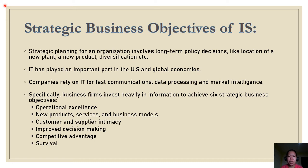The first objective is operational excellence — this relates to achieving excellence in business operations to achieve higher profitability. For example, a consumer goods manufacturer may use a wide distribution network for maximum customer reach, or a manufacturing company may pursue aggressive marketing and mass production. The second objective is new products, services, and business models — this is part of a growth strategy; with the help of IT, a company might opt for an entirely new business model.